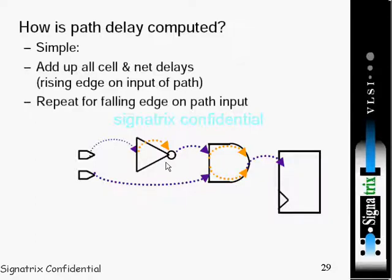So between these two cells we are having connection. This connection is made up of some wires, so this is called net delay. So how path delay is computed? Simply add up all cell and net delays, rising edge on input of path, and repeat for falling edge on the path input.